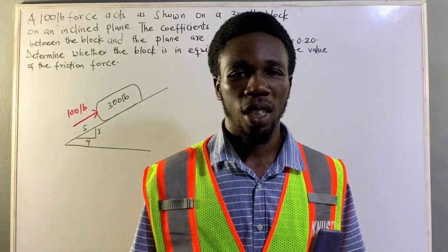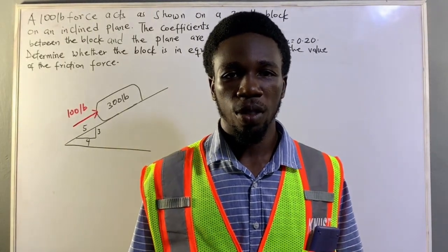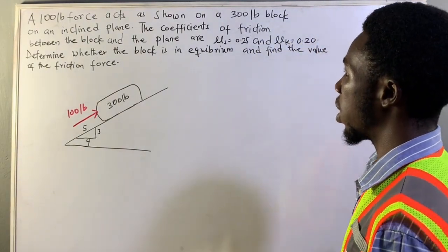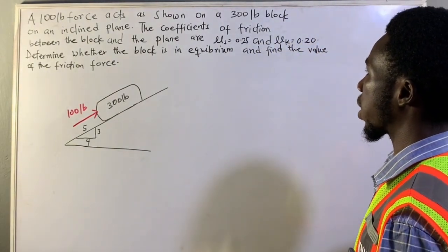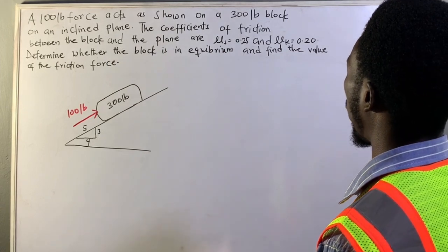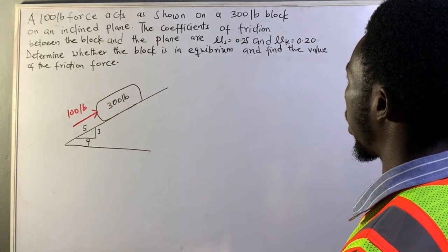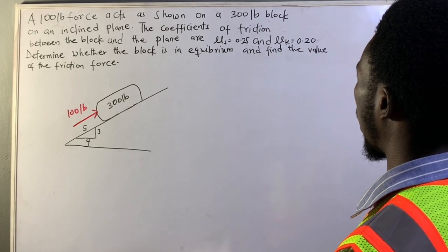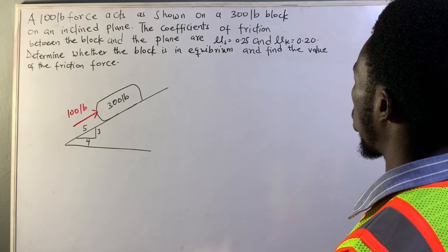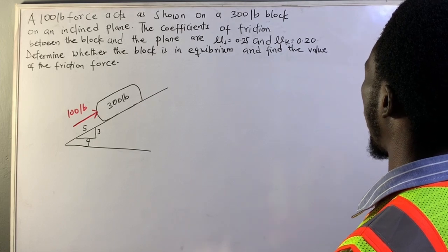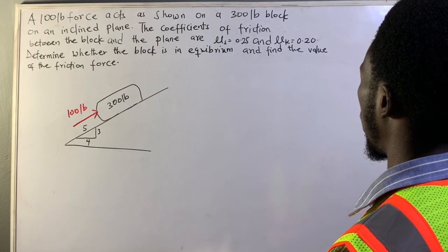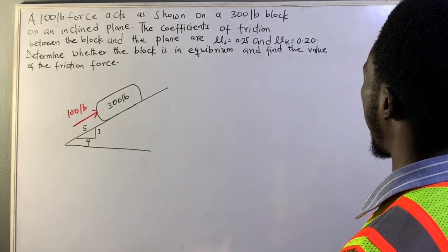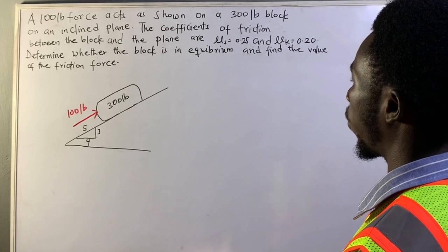Hello everyone, welcome back to this channel. In this video we're going to solve this question on the board. The question says a 100 pounds force acts as shown on a 300 pounds block on an inclined plane. The coefficients of friction are given: the coefficient of static friction is 0.25 and kinetic friction is 0.20. Determine whether the block is in equilibrium and find the value of the friction force.